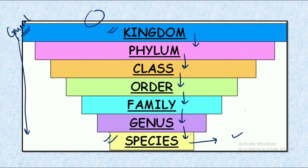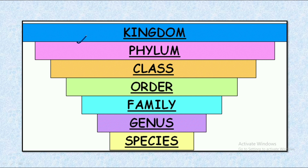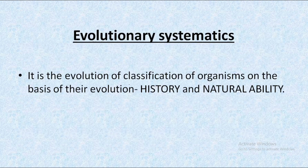When we write the scientific name of any organism, we represent it by the name of the genus and the species. For example, humans are known as Homo sapiens — Homo is the genus and sapiens is the species. The former name is the genus and the latter is the species. You can remember the initial letters of each level and make a mnemonic to remember it in the examination.